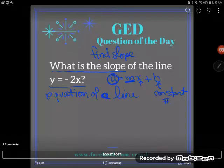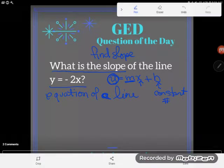A constant is just a number that's by itself. It's not multiplying by any number of x's or y's or anything like that.